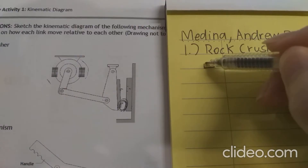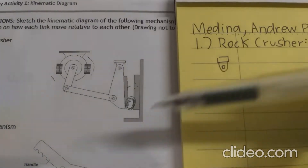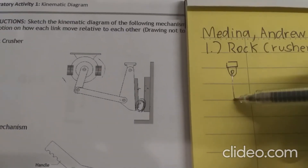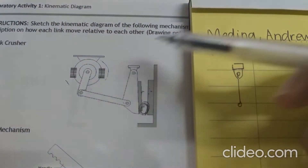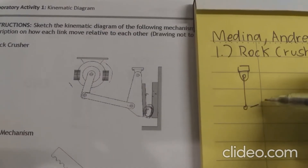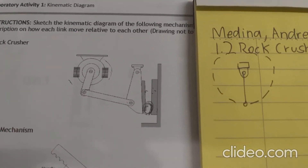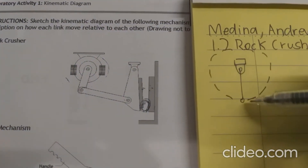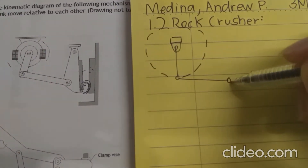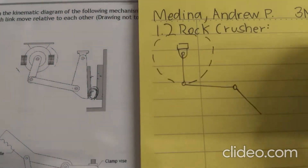The first link we have is the frame. The frame doesn't move; the rest of the machine moves based on the frame. Attached to the frame is a binary link, and as you can see from the machine, the binary link revolves around the frame — so we need to capture this motion. The binary link is connected to another binary link, and this second binary link is a binary link with a point of interest, that point of interest being where the rocks are crushed.